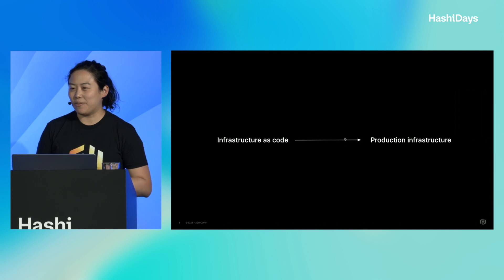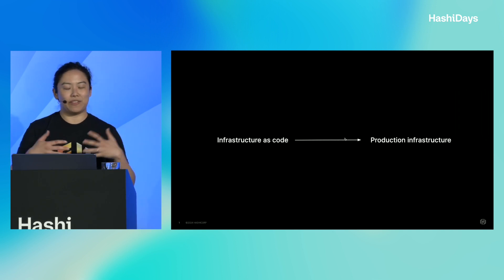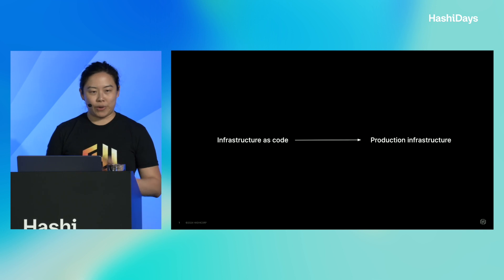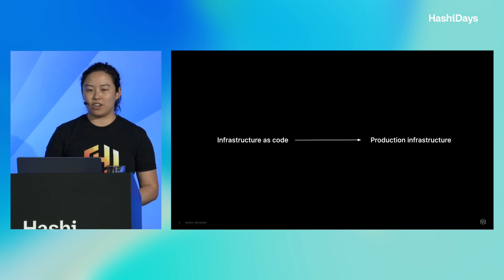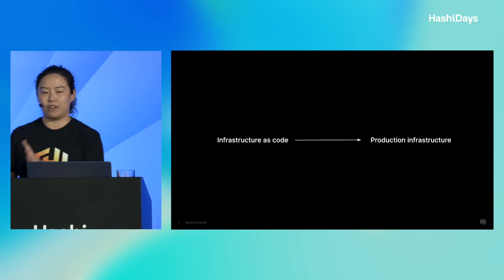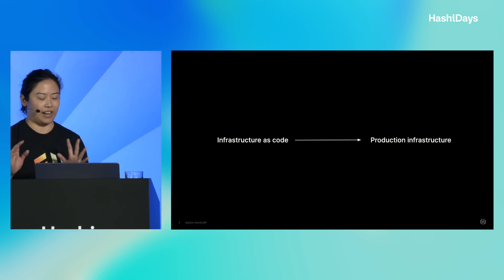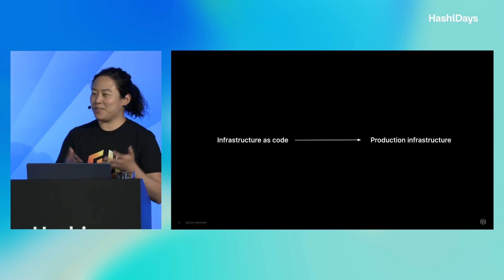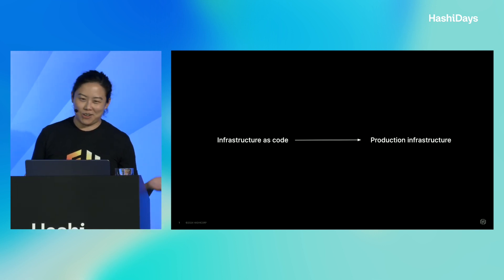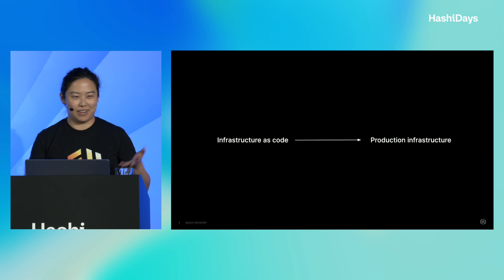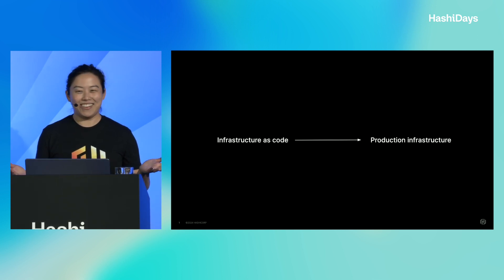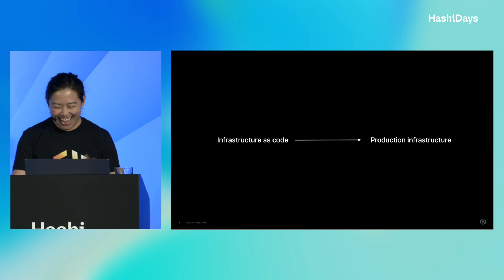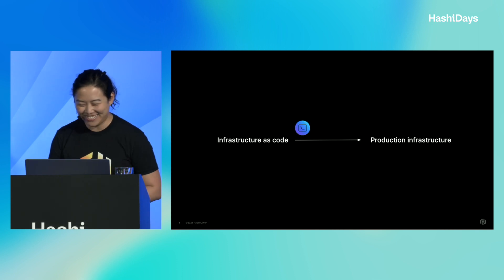What we've done is we've established a norm of creating infrastructure as code to push changes to production infrastructure and applications. If you're in this room, please raise your hand if you're using infrastructure as code to deploy production infrastructure. Good — it's a lot of you in here. I'm glad we're in the right place.